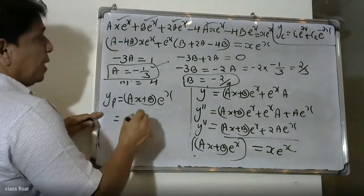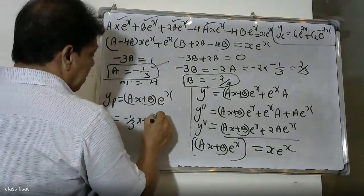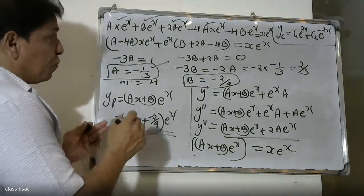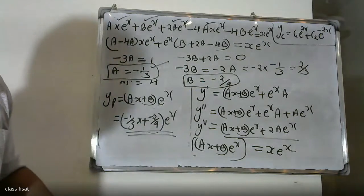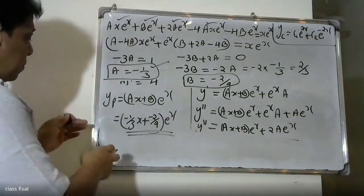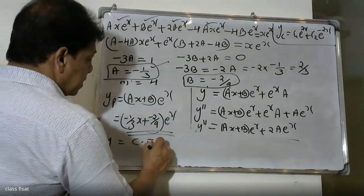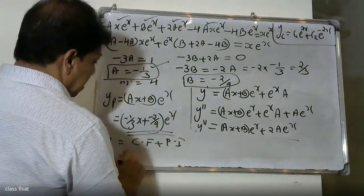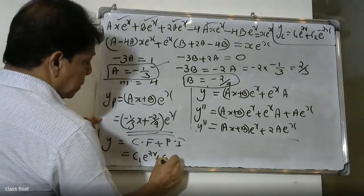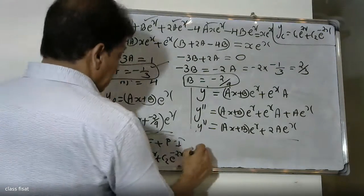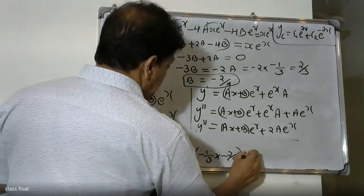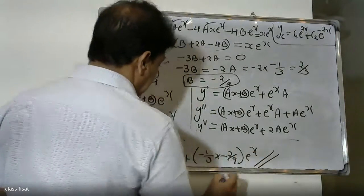Therefore the particular integral yp equals minus 1 by 3 times x minus 2 by 9, into e raise to x. The final complete solution y equals yc plus yp.